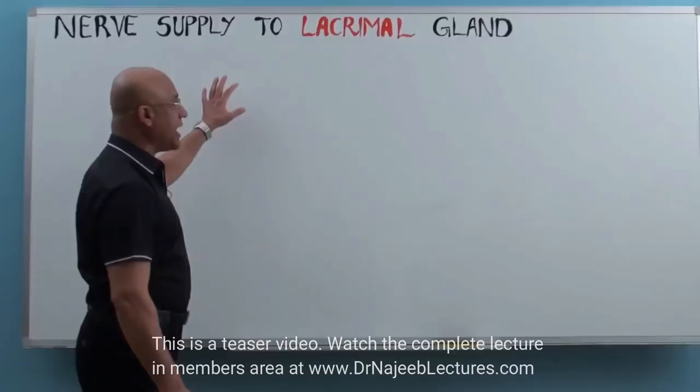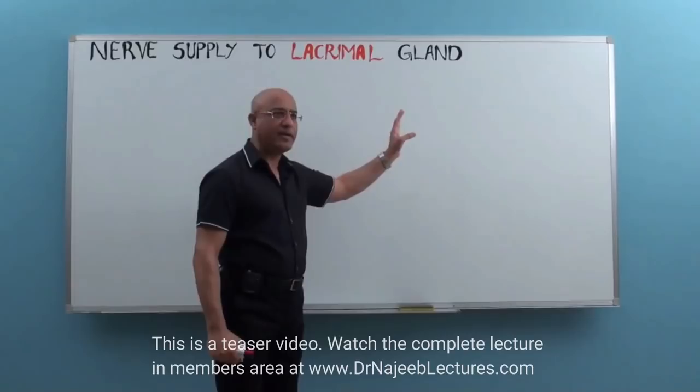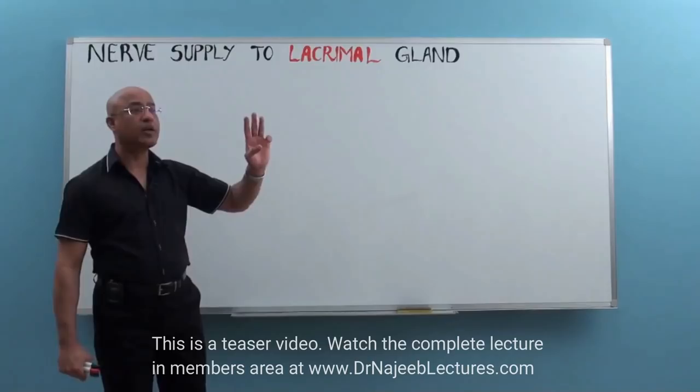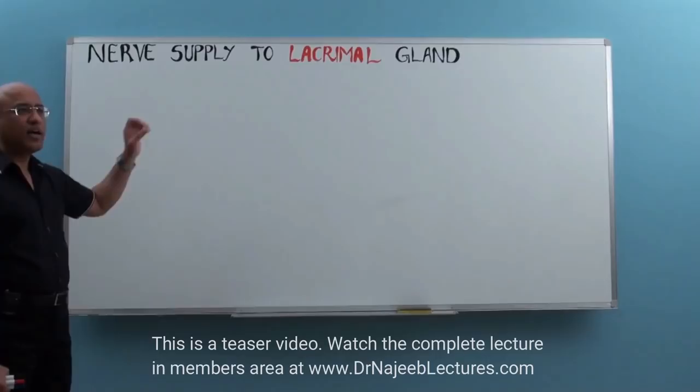Today we are going to talk about the nerve supply to the lacrimal gland. A student who is really clear about the nerve supply of the lacrimal gland means he has very clear concepts about the 7th cranial nerve — that is the facial nerve — he is very clear about the greater petrosal nerve, very clear about the pterygopalatine ganglion, and certain other neuronal connections in the head and neck.